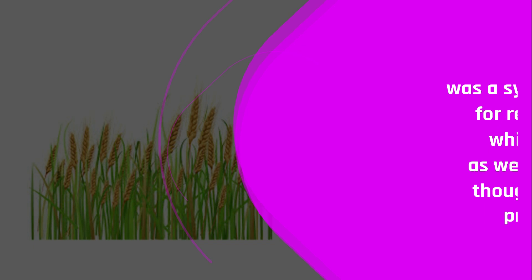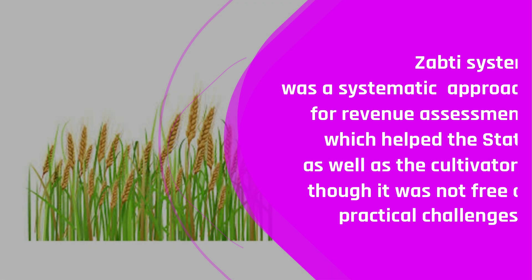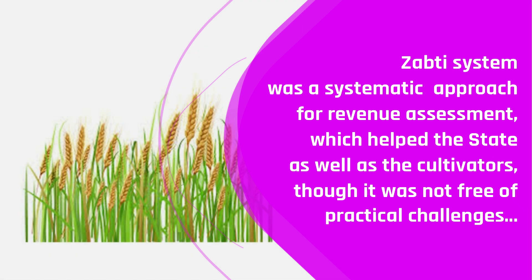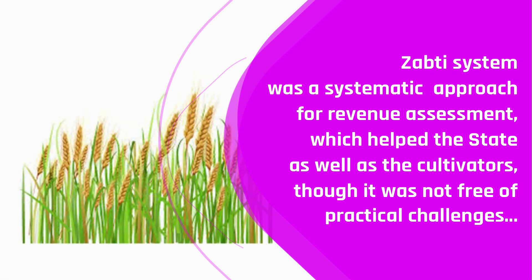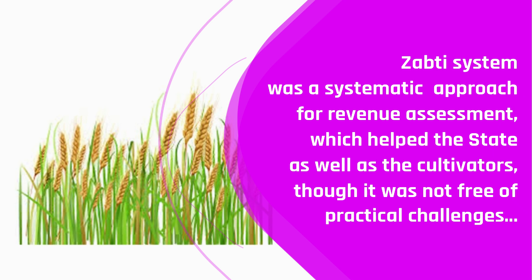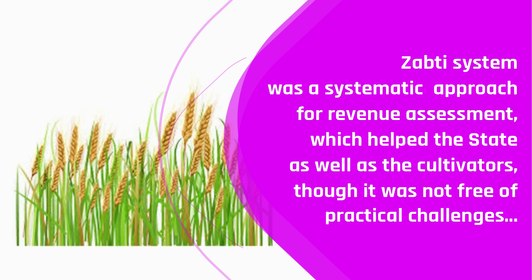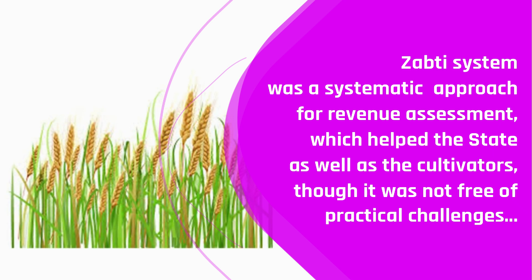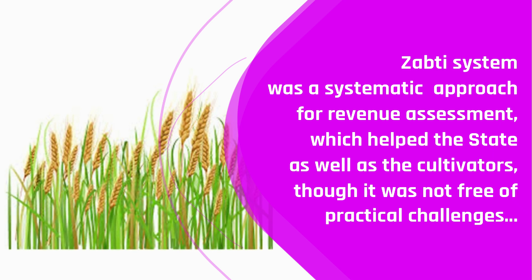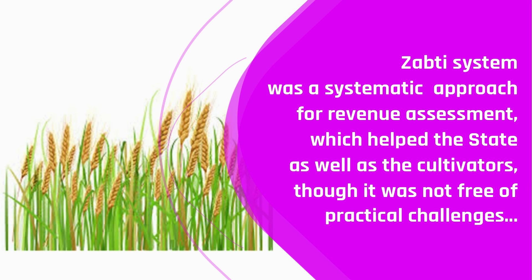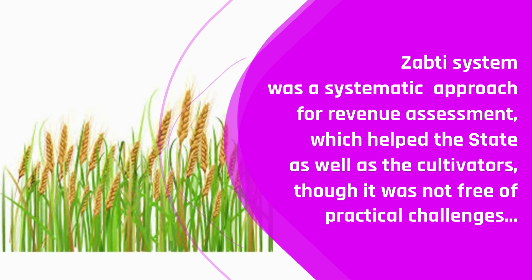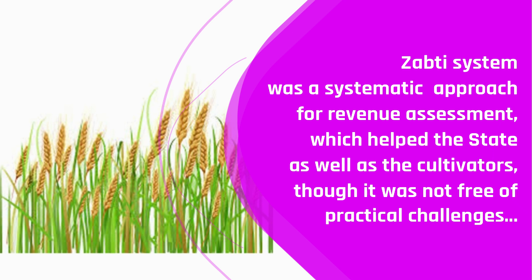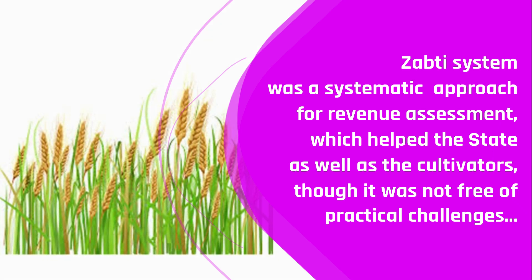Looking at the entire Zapti system, we can say it was surely a systematic approach to revenue assessment which helped both the state and the cultivators. The government knew its calculated revenue, and peasants knew how much they had to pay. Landlords, Jagirdars, or any official could not force cultivators to pay any extra amount. But practically, it must not have been this smooth — there must have been challenges like less production than expected, corrupt officials, or ignorance among peasants.